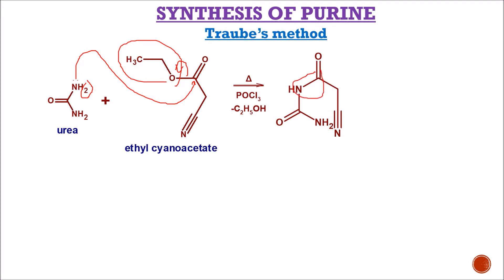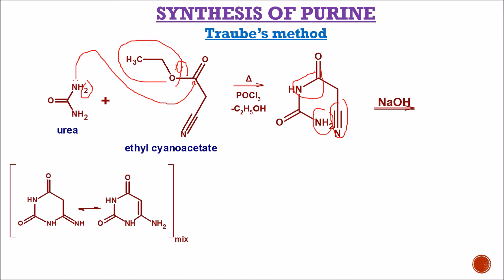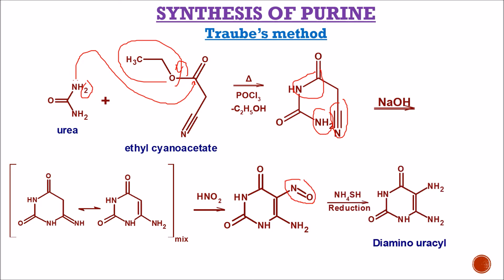This is an open ring structure. After reaction in the presence of NaOH under basic conditions, ring closure takes place, one mole of ammonia gas is liberated, and a new structure is formed. This is a tautomer of that structure. In the presence of nitrous acid, at the fifth position a nitroso group is attached, and after reduction of this nitroso group, the NO group is converted into an NH2 group, and diaminouracil is formed.